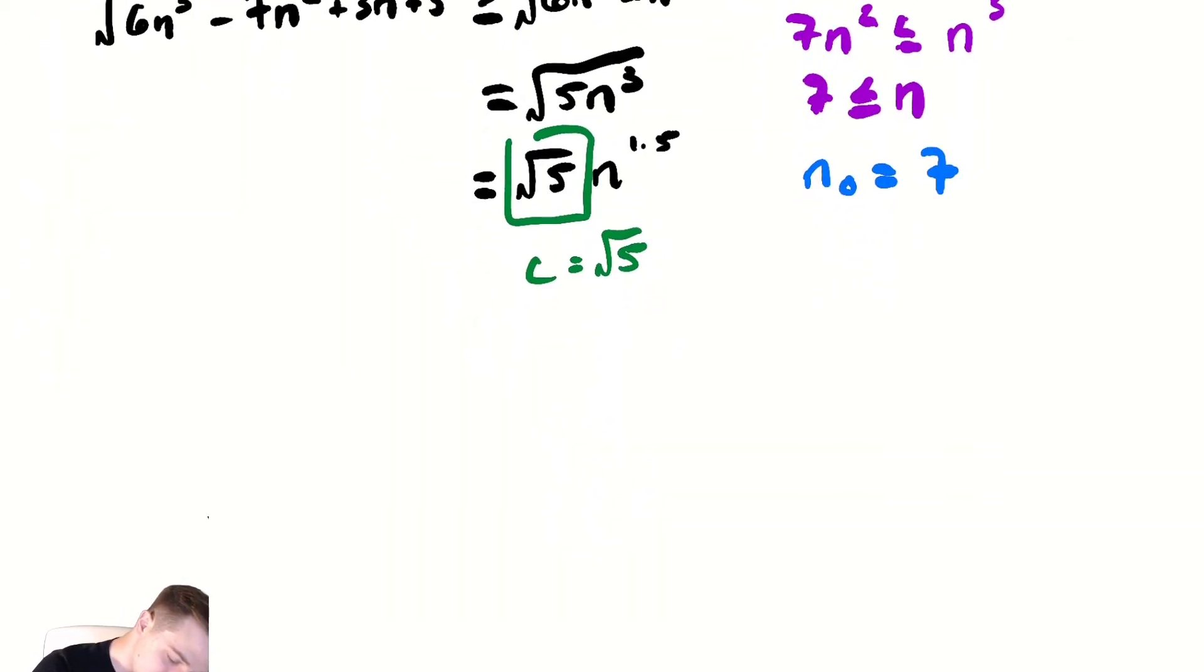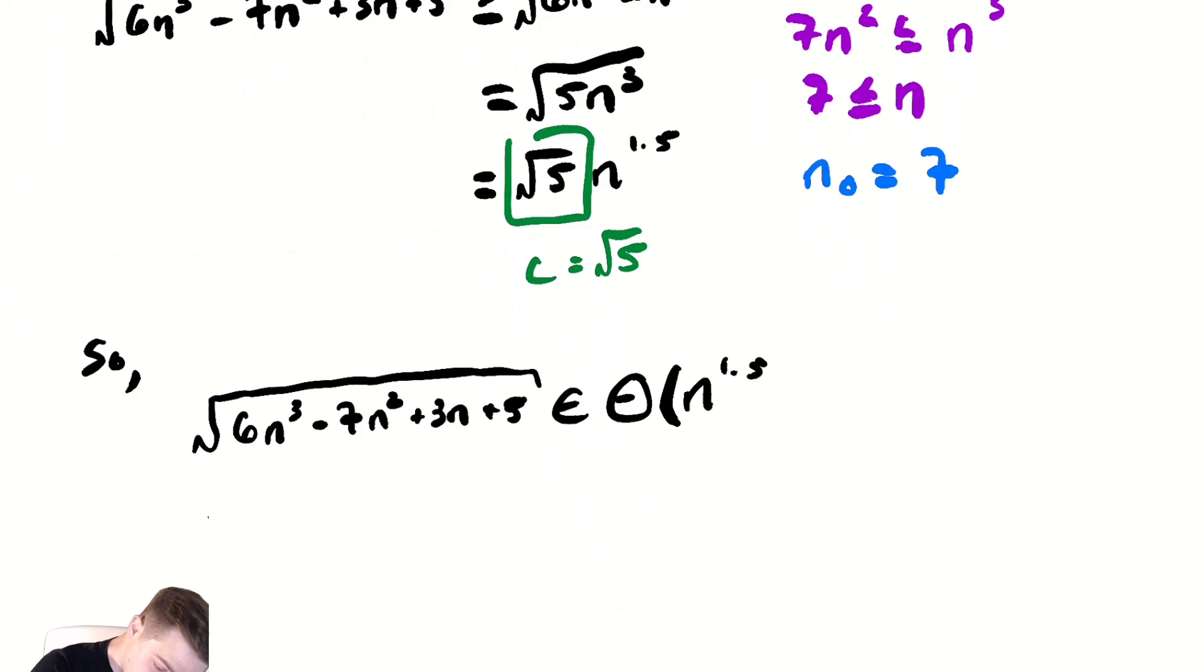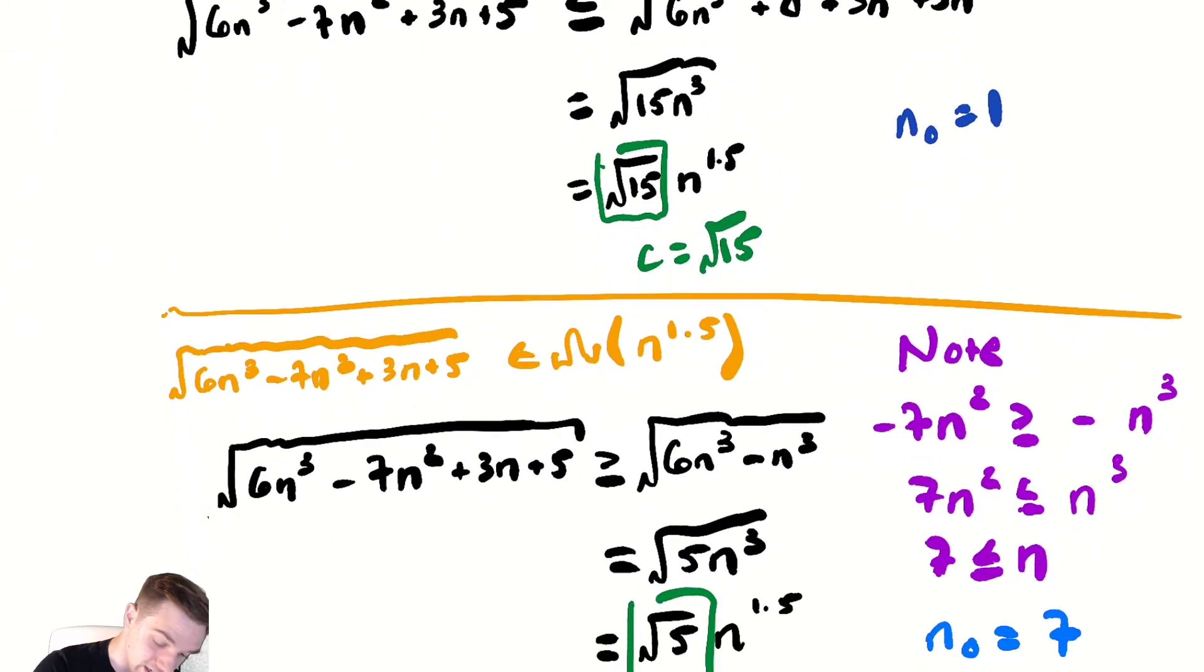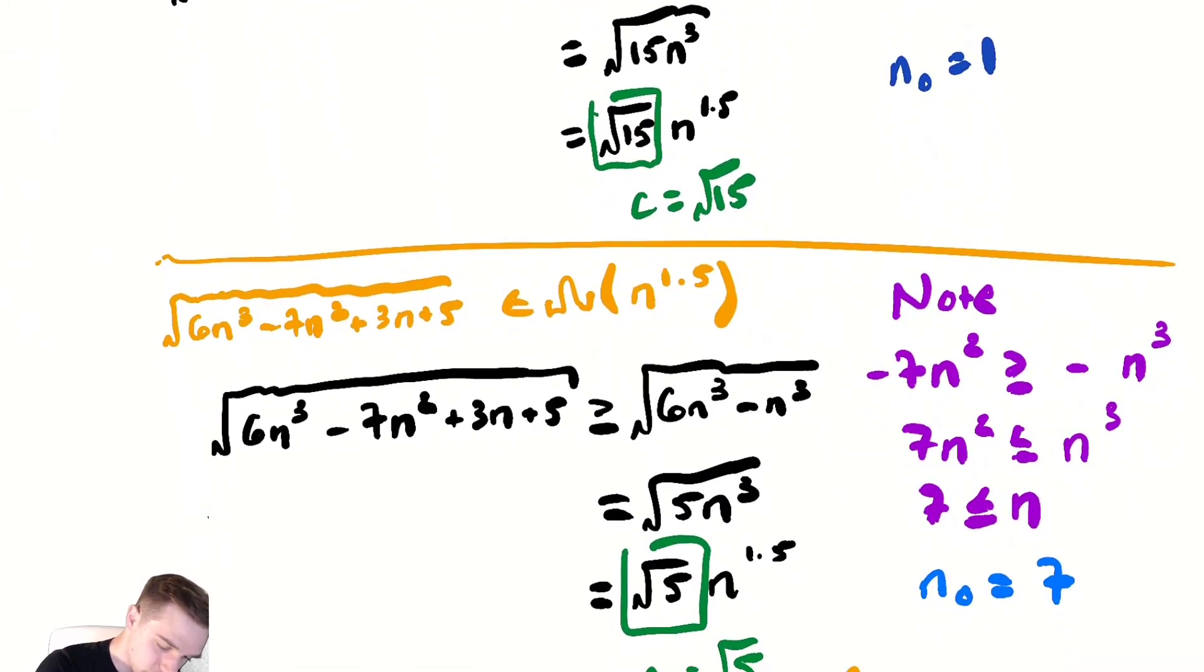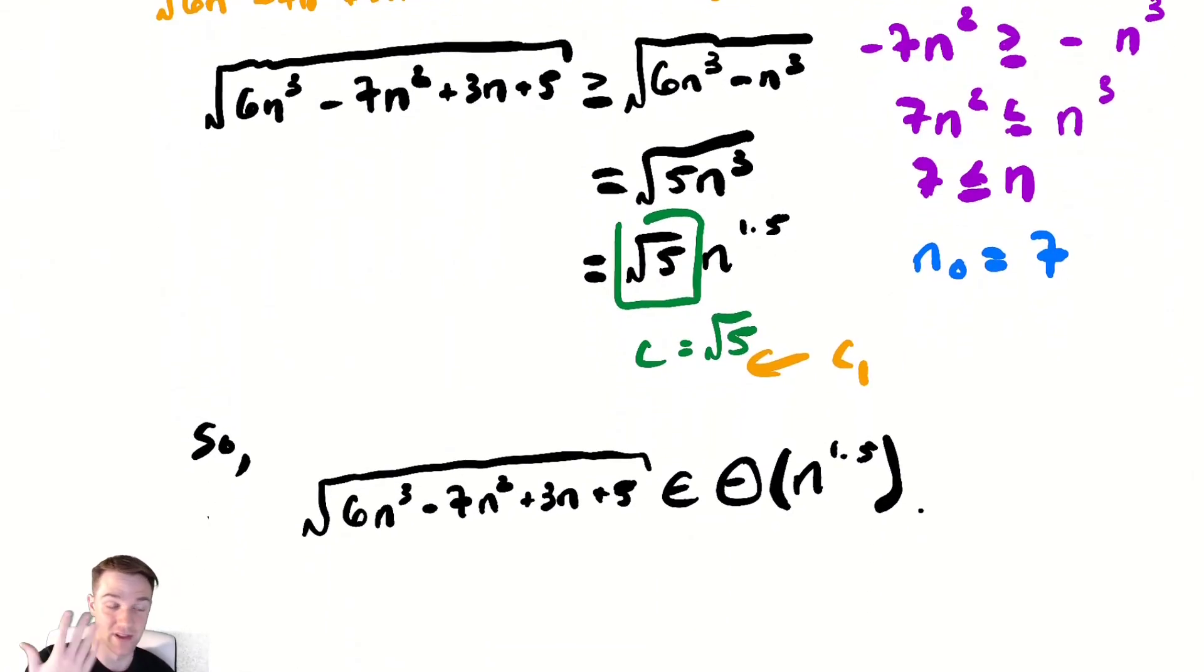So our final conclusion. So radical 6n cubed minus 7n squared plus 3n plus 5 is in theta of n to the 1.5. And again if we wanted to be more meticulous maybe we would call this constant here c1, this constant here to be c2, and our choice of n0 would be 7 if we wanted to follow directly from the definition. But that's not always necessary. This is always sufficient for our purposes. Showing it is in big O of something and in big omega of the same something means that it is in big theta of that said something.